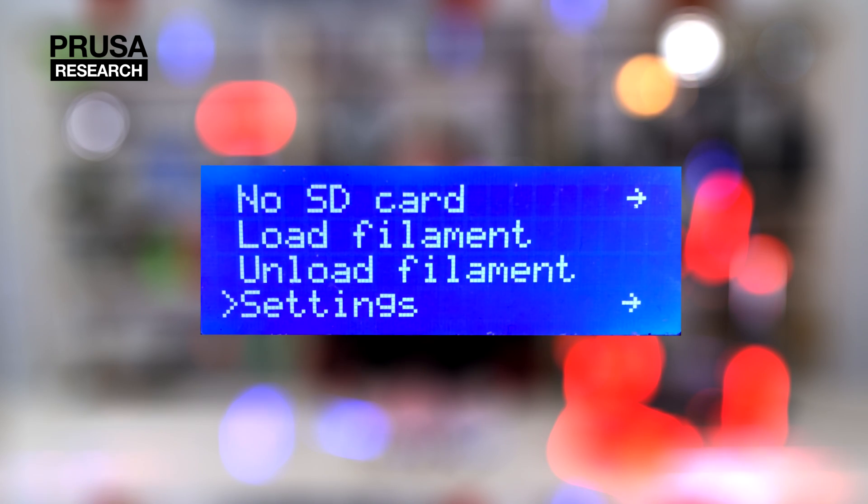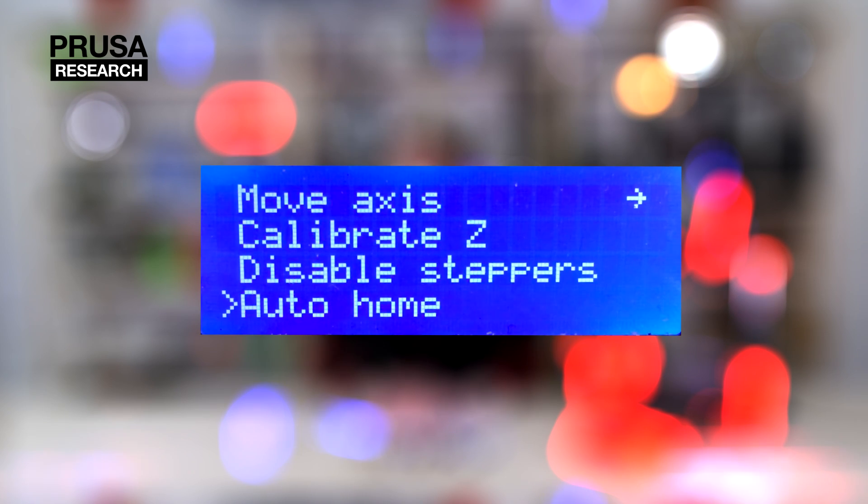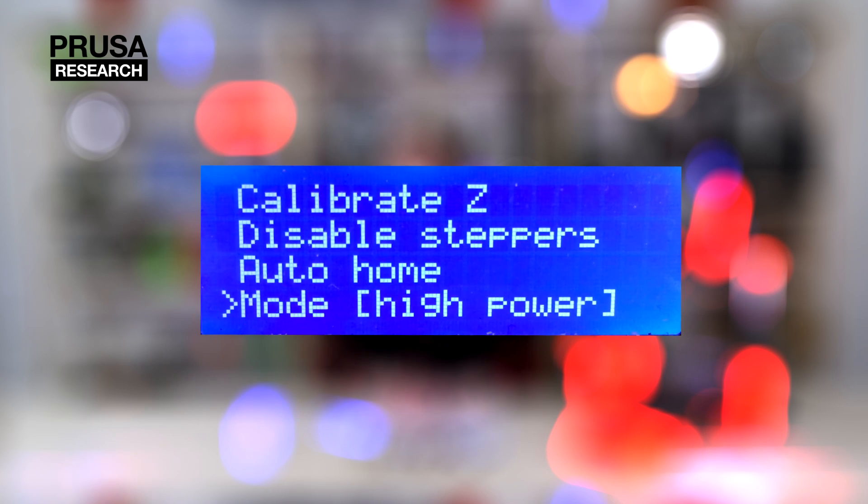Next, in LCD menu in settings, switch from silent to high power mode. The printer will be louder, but motors will be supplied with higher power.